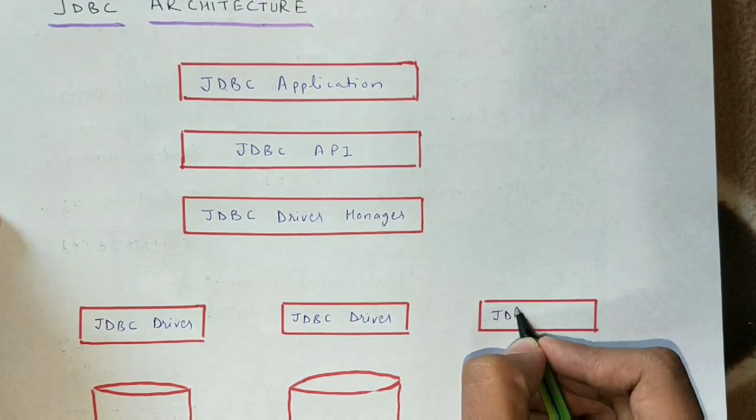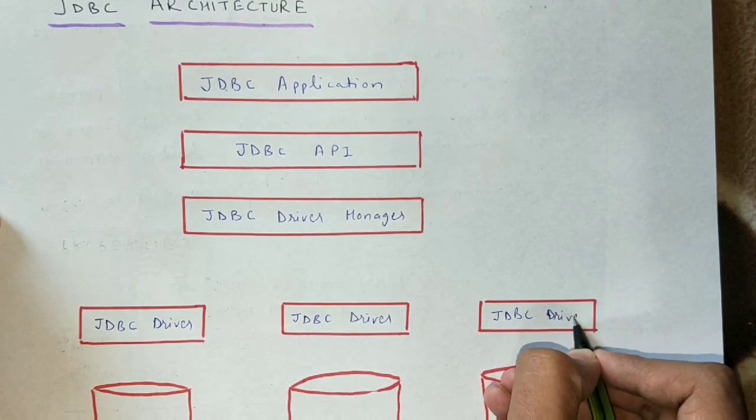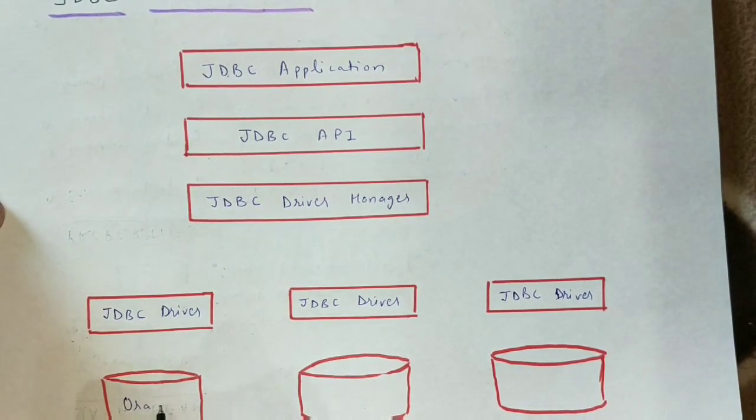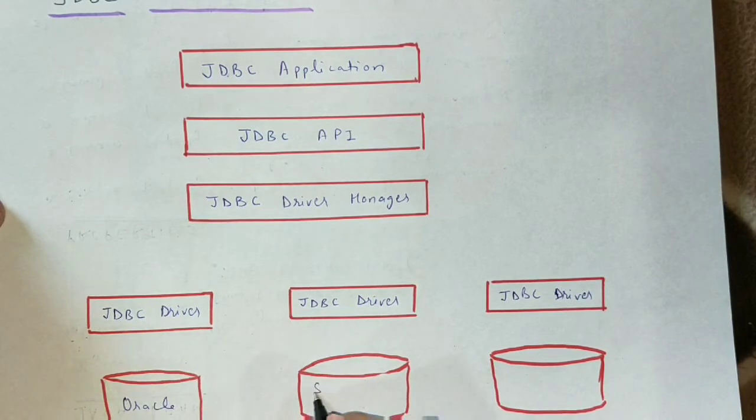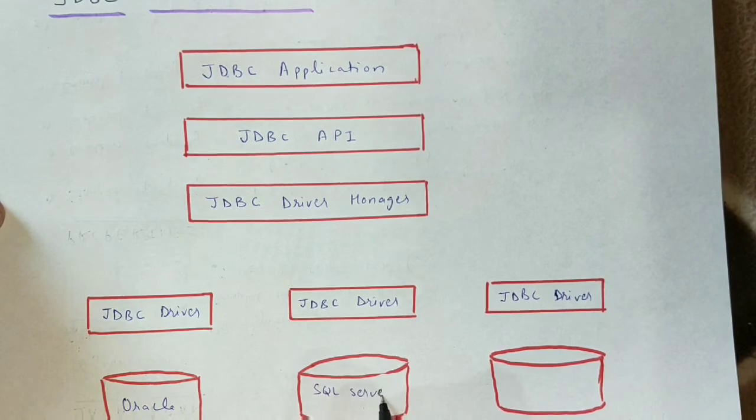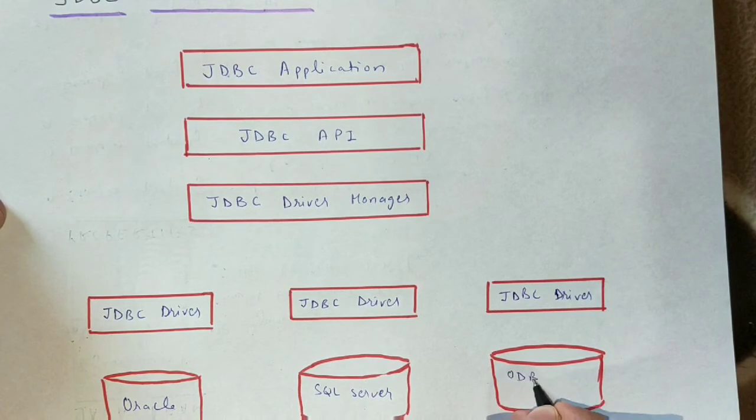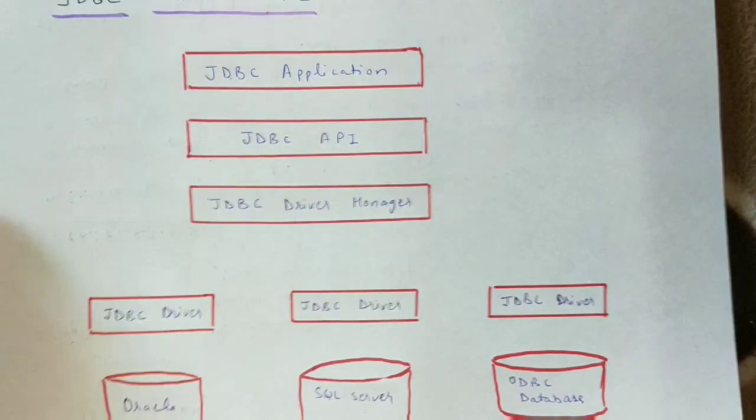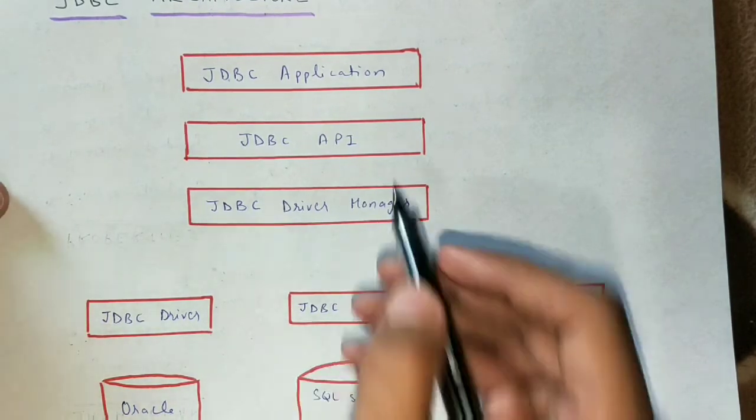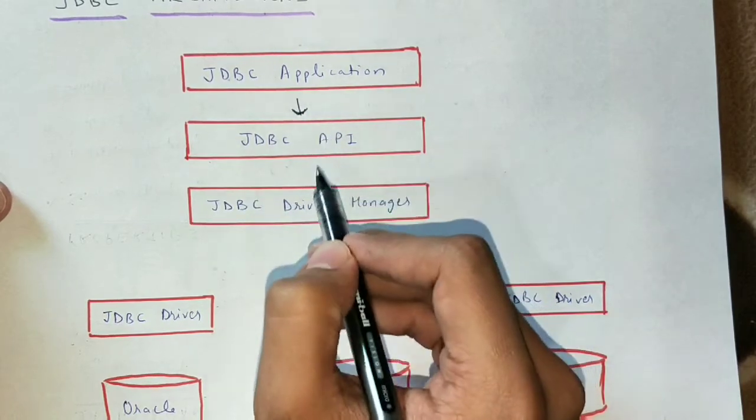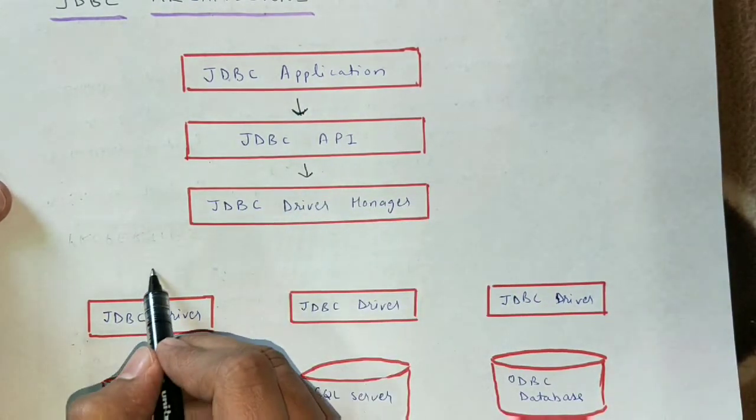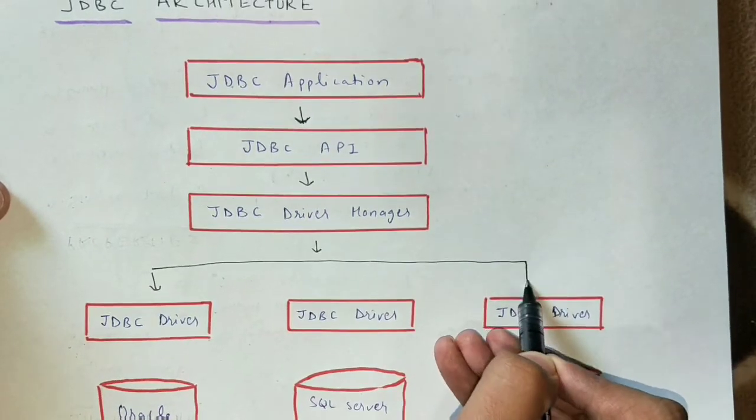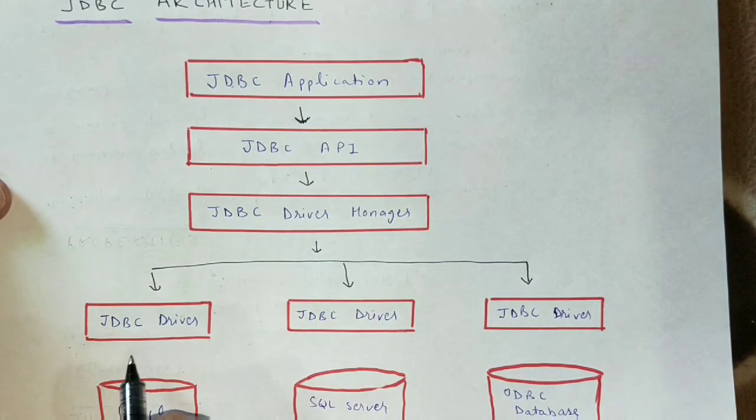For different type of databases so that we can communicate with them. The first database, we have Oracle. Here we have SQL server. And in the last we have ODBC database. Let me connect all the boxes. JDBC application to JDBC API, JDBC API to JDBC driver manager, JDBC driver manager to all the JDBC drivers, and at last JDBC driver to database.